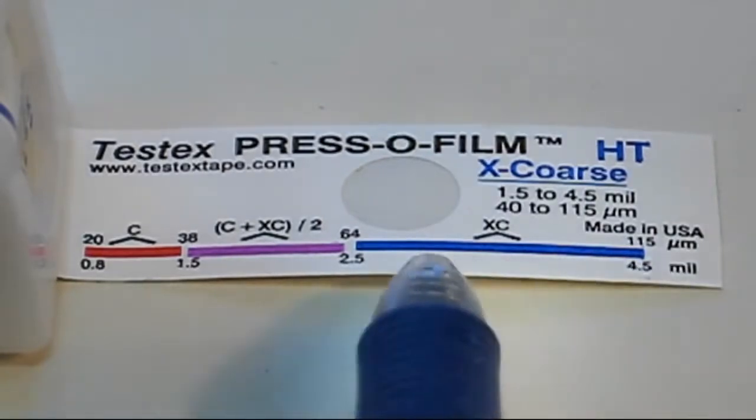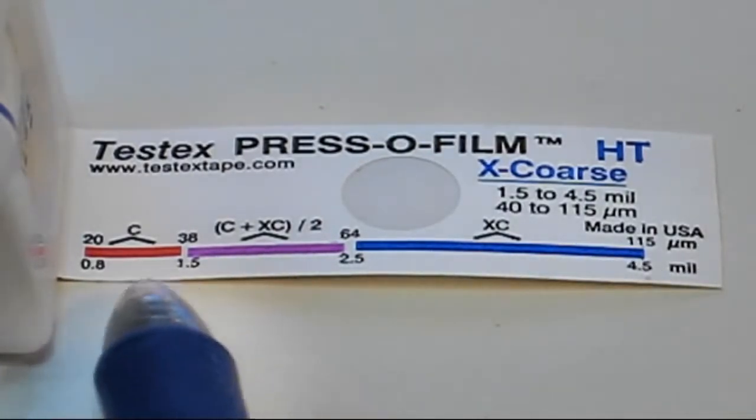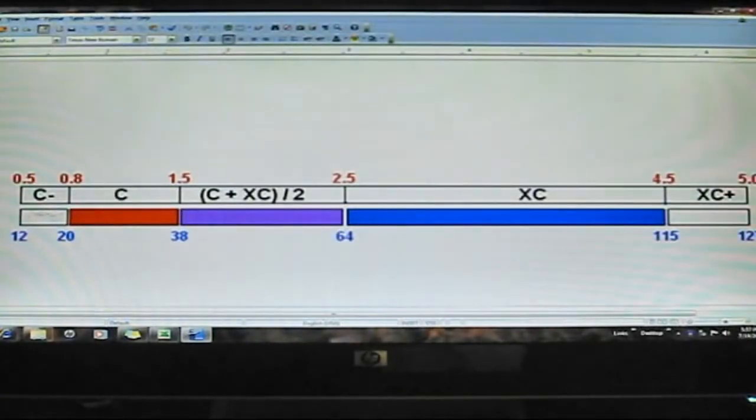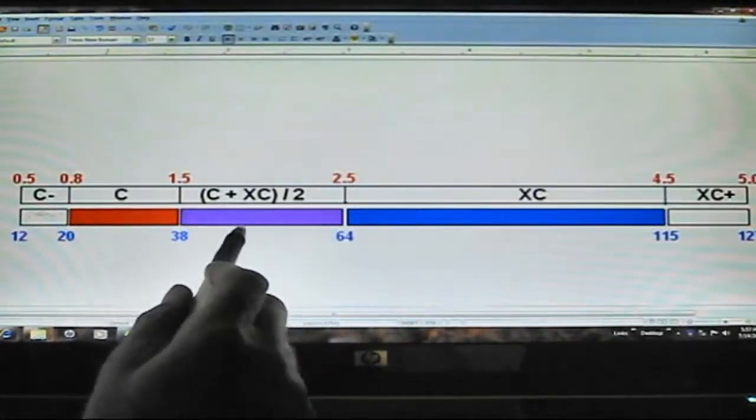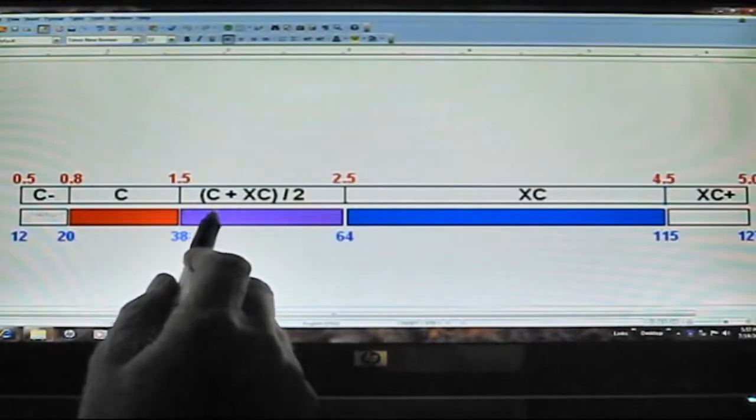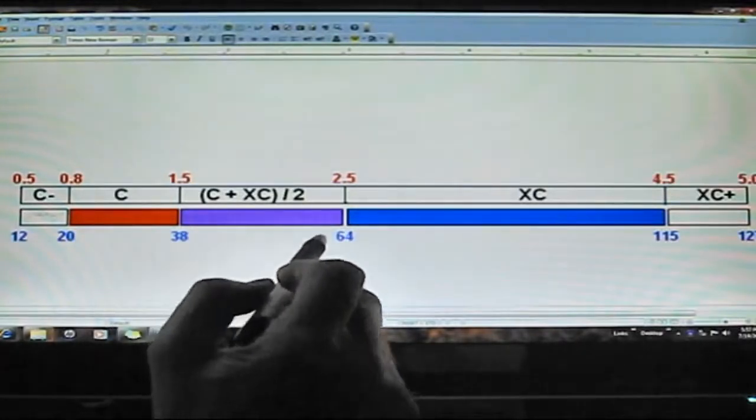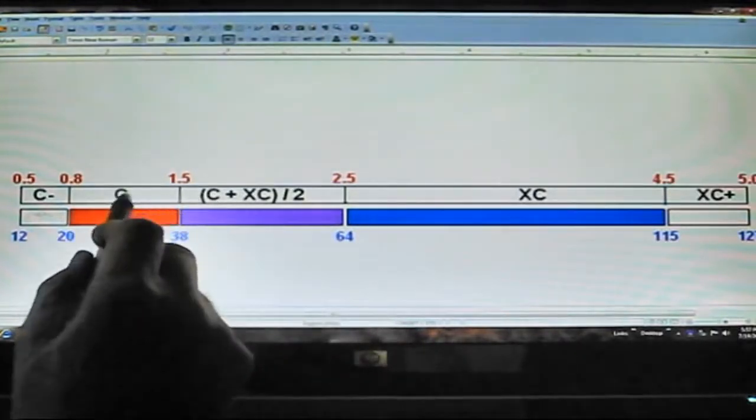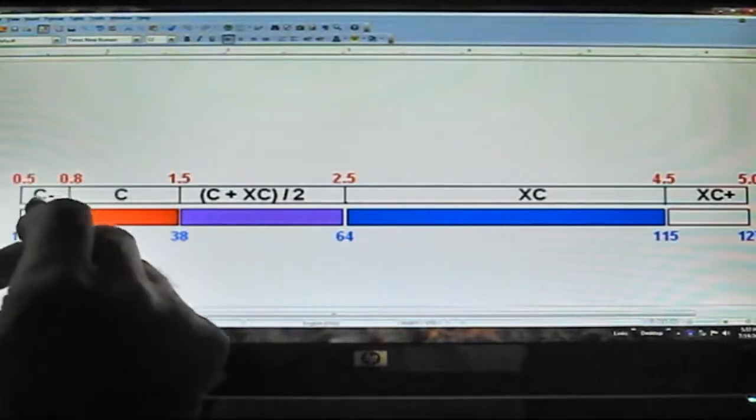Take the reading you just obtained and record it. If, as is the case here, the measurement is within the overlap range, TestX recommends that you take a second reading, this time with the other grade.